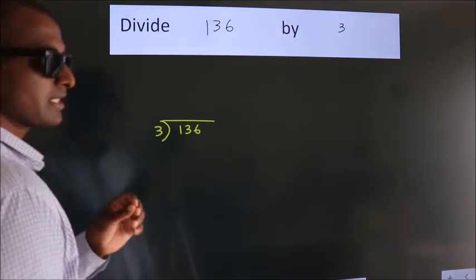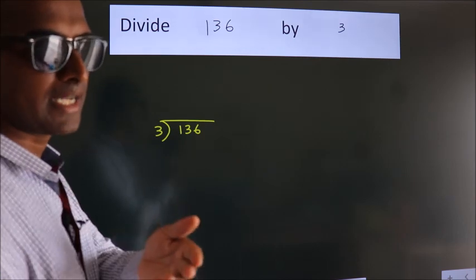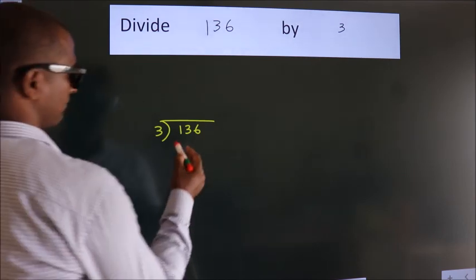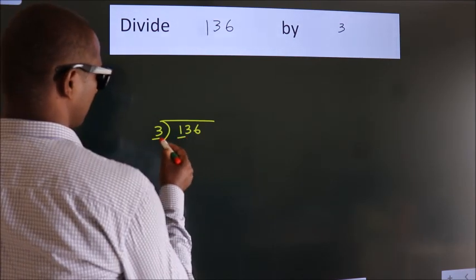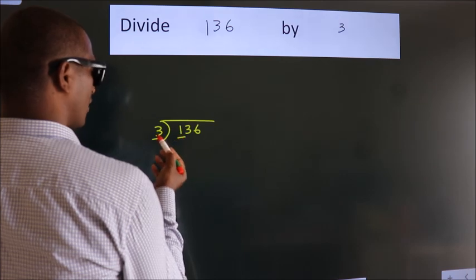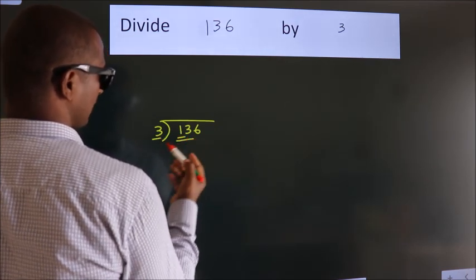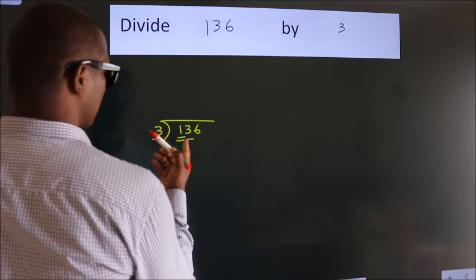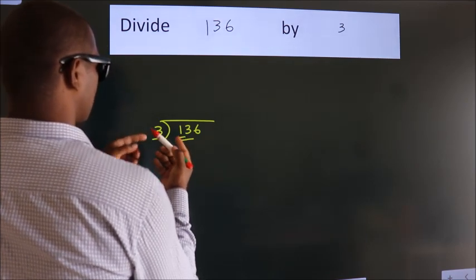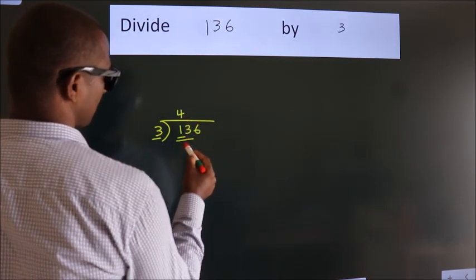This is your step 1. Next, here we have 1, here 3. 1 smaller than 3. So, we should take 2 numbers, 13. A number close to 13 in 3 table is 3 fours, 12.